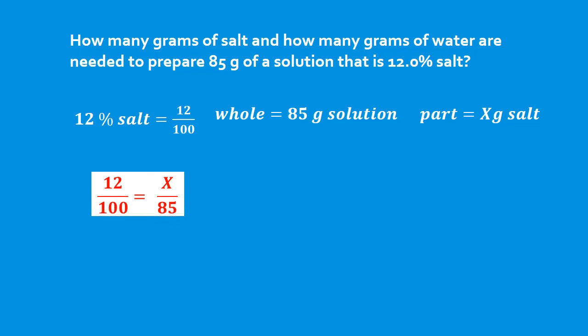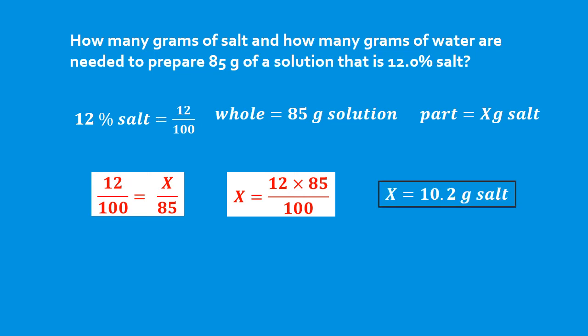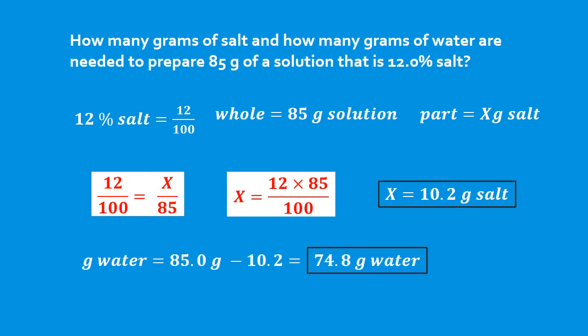We use that ratio to solve for x: 12 times 85 divided by 100 gives us 10.2 grams of salt. So if our total mass is 85 grams and our grams of salt is 10.2, then our grams of water would be 85 minus 10.2, which is 74.8 grams of water.